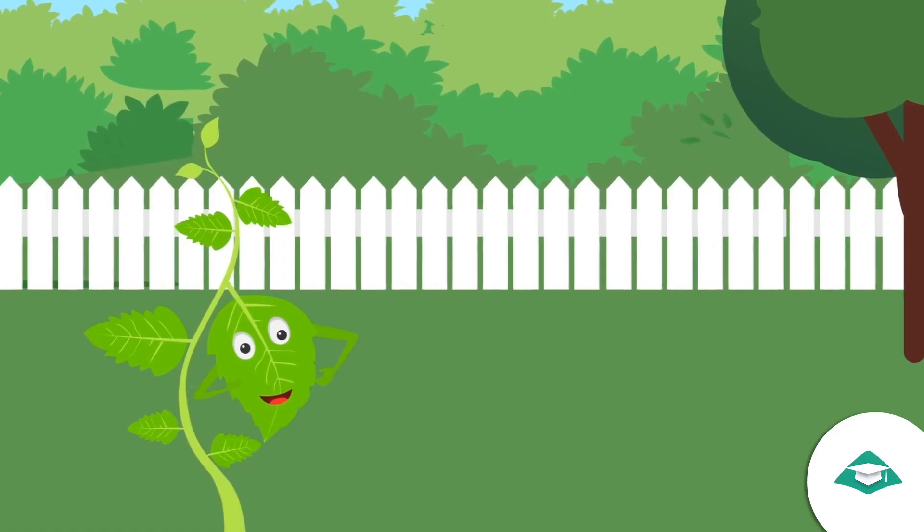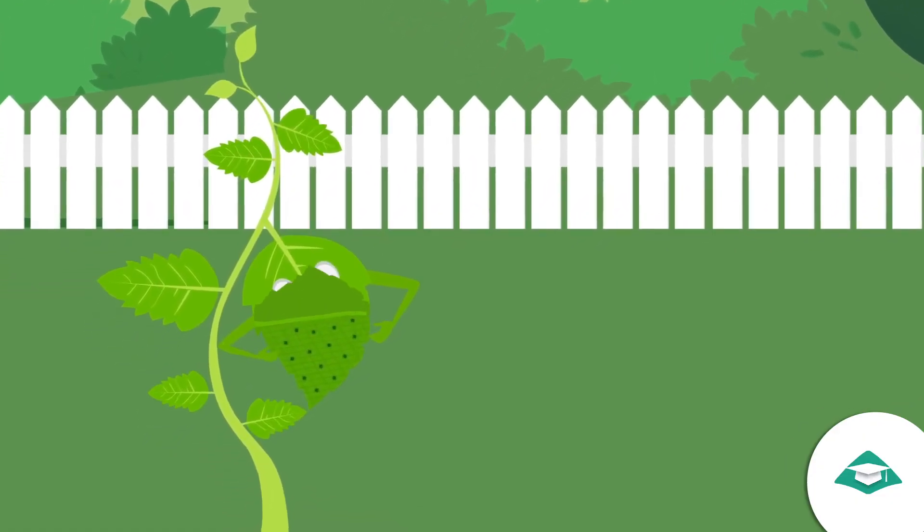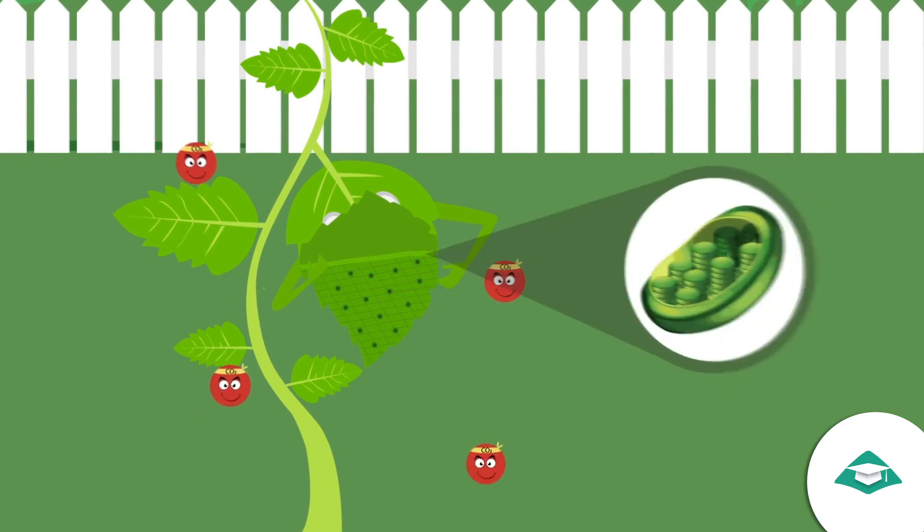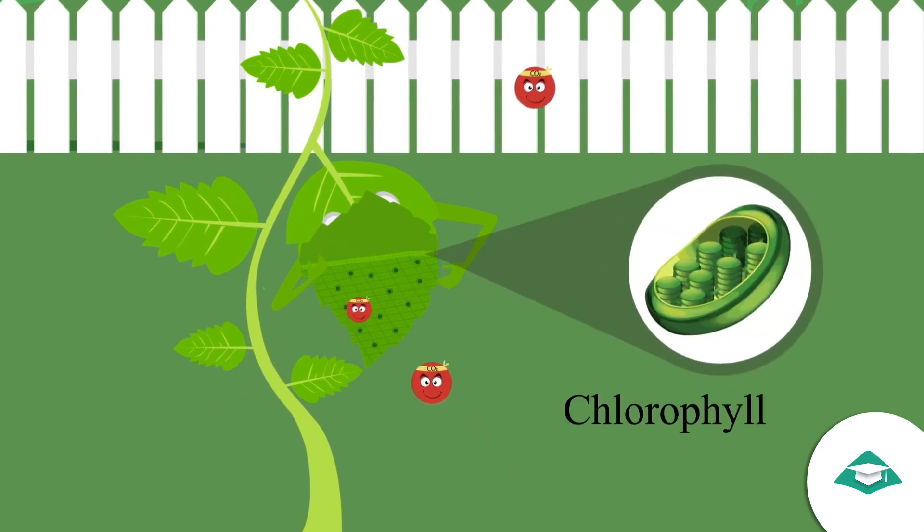Plant cells contain small structures called chloroplasts. These chloroplasts contain chlorophyll, which is the green pigment of leaves.